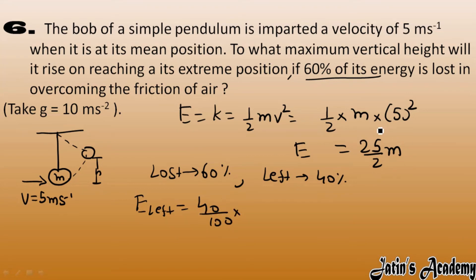It means that energy left we have 40% of energy which is initial energy 25 by 2 m. So just here cancel it out, calculate some things. Okay, so here we got it as 5 m. So the energy left in this pendulum we got it as 5 m, m is a mass.